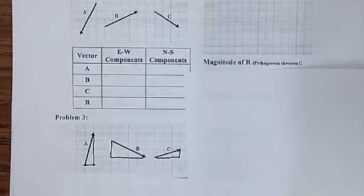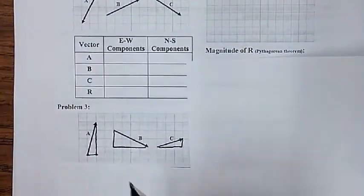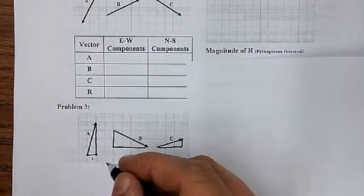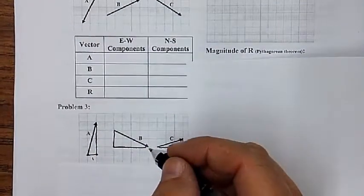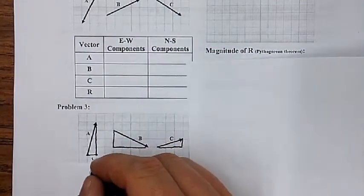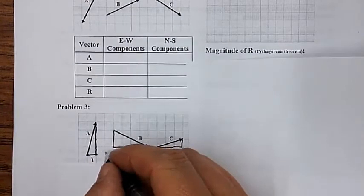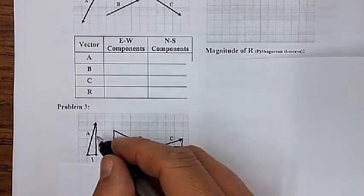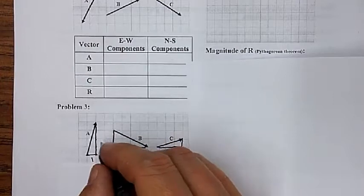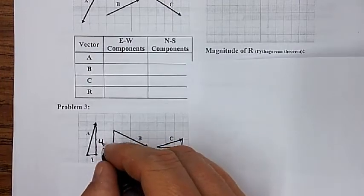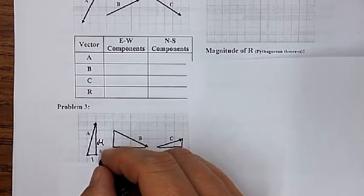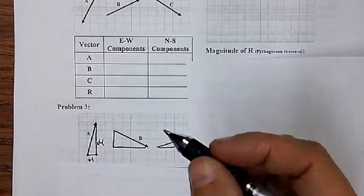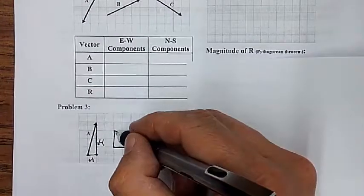So as I go here, it's going to come over one — so the right is positive — and then I'm going to come up one, two, three, four. So those are positive, and that one's positive.